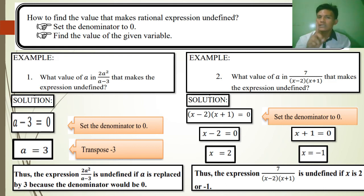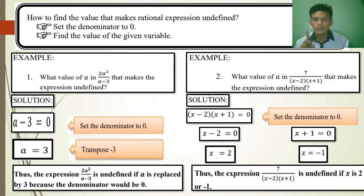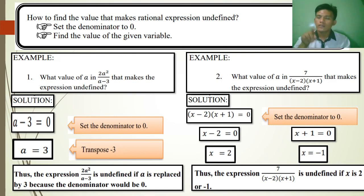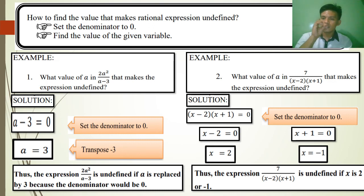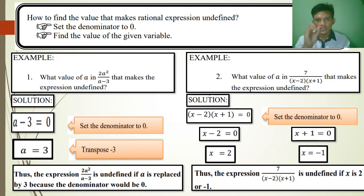If that's so, the denominator will be 0. Let's verify by replacing x with 2 in the denominator: 2 minus 2 equals 0. For x plus 1, when you multiply by 0, the answer is 0. Therefore, the expression is undefined.